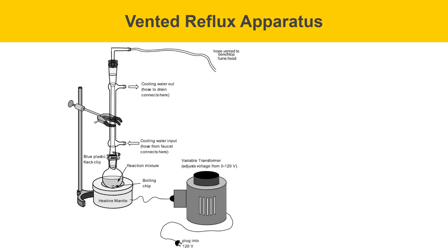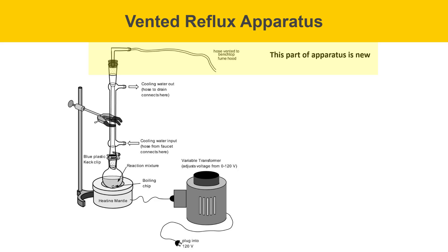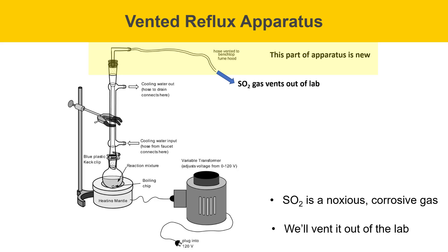A vented reflux apparatus consists of a flask with liquid attached to a condenser arranged straight up and down. The heating source is a heating mantle plugged into a variable transformer. Cooling water goes in through the bottom and out through the top to keep the condenser full of water and allow air bubbles to escape. A new feature of this apparatus is a hose vented to a bench top fume hood, so that the SO2 gas produced by the reaction can vent out of the lab rather than into the lab.